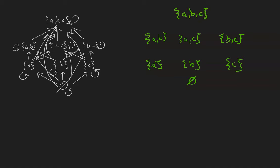I'm going to draw an edge from the empty set up to each of the singletons, and I'm going to draw an edge from each singleton up to the pair that contains it. Then I'm going to draw an edge from each pair up to the universal set.